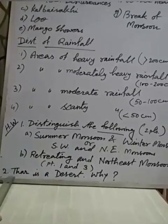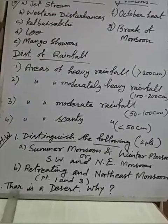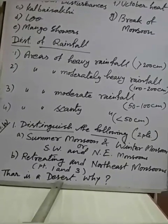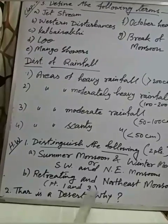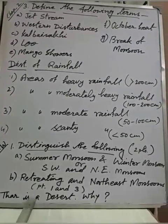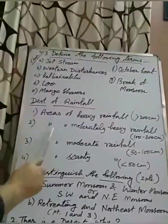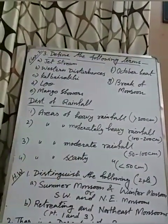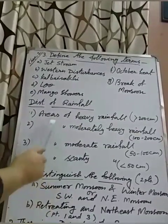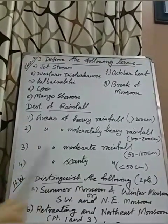Question number two: Thar is a desert — why? Give the reason. I didn't discuss this particular part, but you know Thar is the desert of our country. Even though our country receives huge rain in many regions, a desert formed here. I want to see your answers. Try to write this on the basis of what I discussed about the seasons of India. Also complete the distribution of rainfall table — find at least two locations for each of the four rainfall divisions.